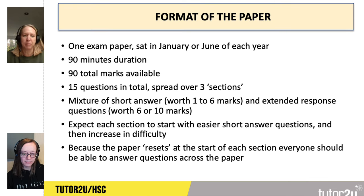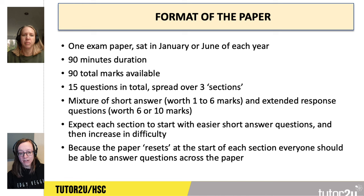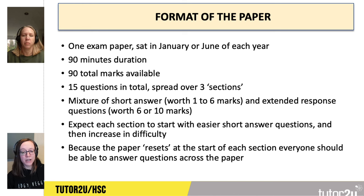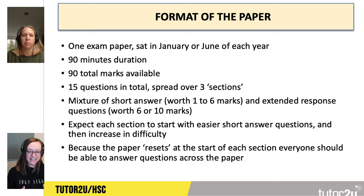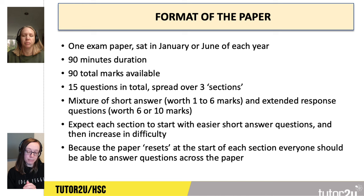So Liz, tell us a bit about the format of the paper. For Unit 1 there is just one exam paper and you sit this either in January or June of each year. It's a 90-minute paper and there are 90 total marks available, so that means you've got one minute per mark, so it's quite tough. There are 15 questions in total, spread over three sections. There's a mixture of short answer questions worth one to six marks and extended response questions worth six to ten marks. Each section starts with a relatively easy short answer question and then it builds in difficulty throughout the section. Because the paper resets at each section, everyone should be able to answer questions across the whole exam paper.